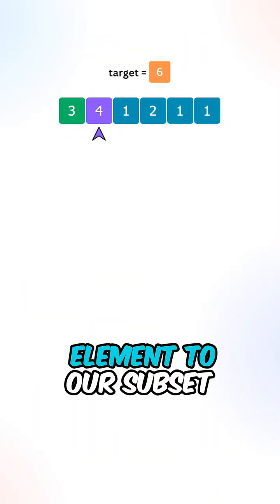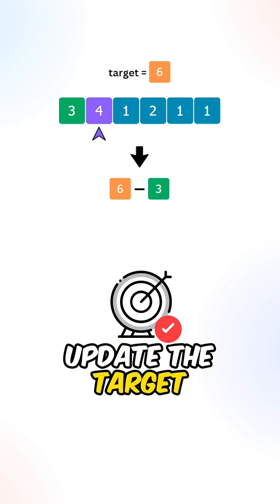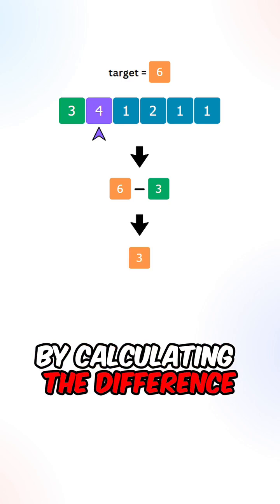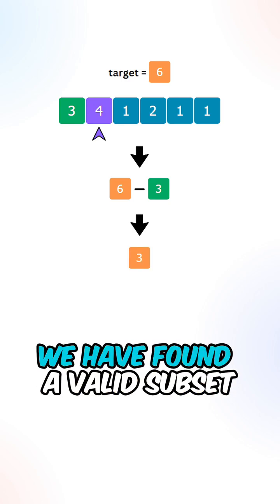Now after adding the element to our subset, we need to update the target by calculating the difference. If target ever reaches 0, we have found a valid subset.